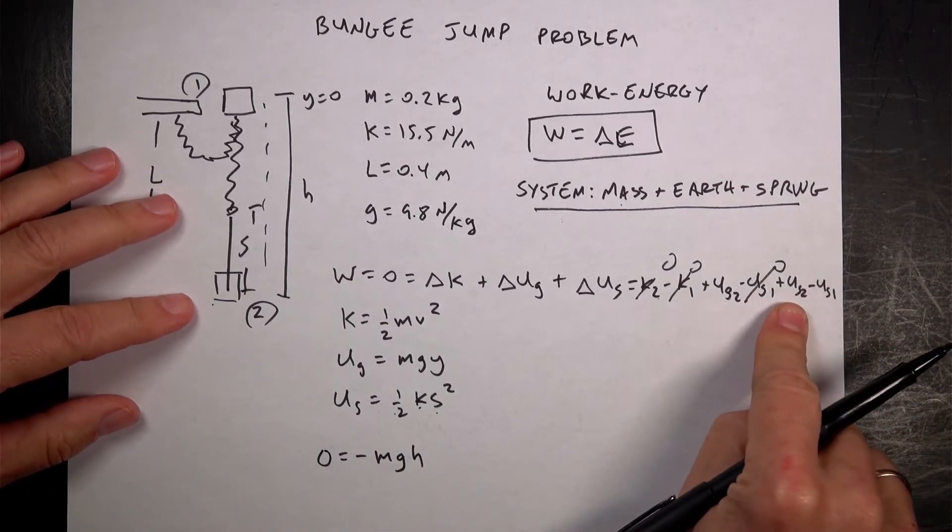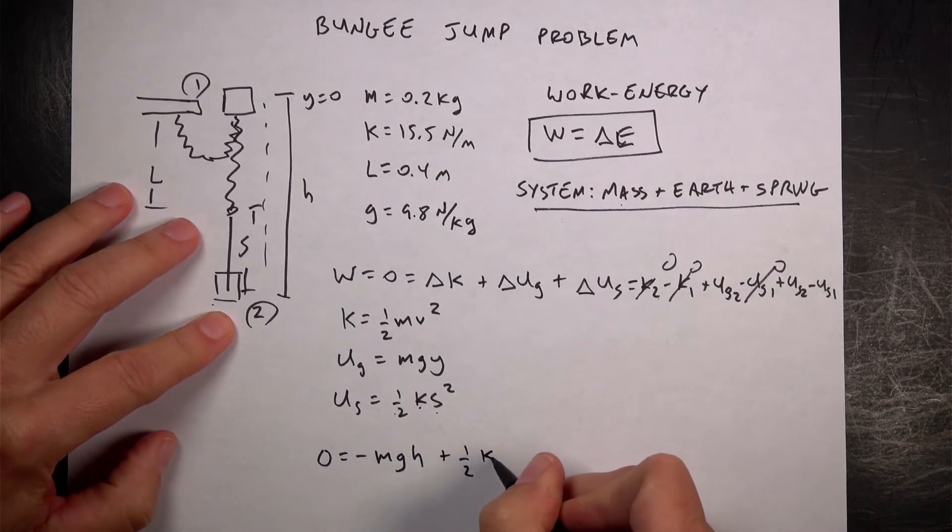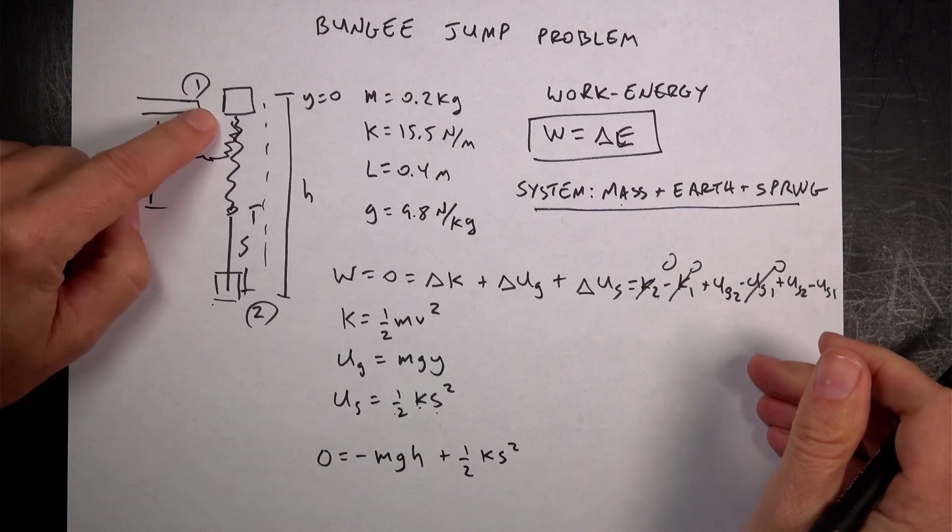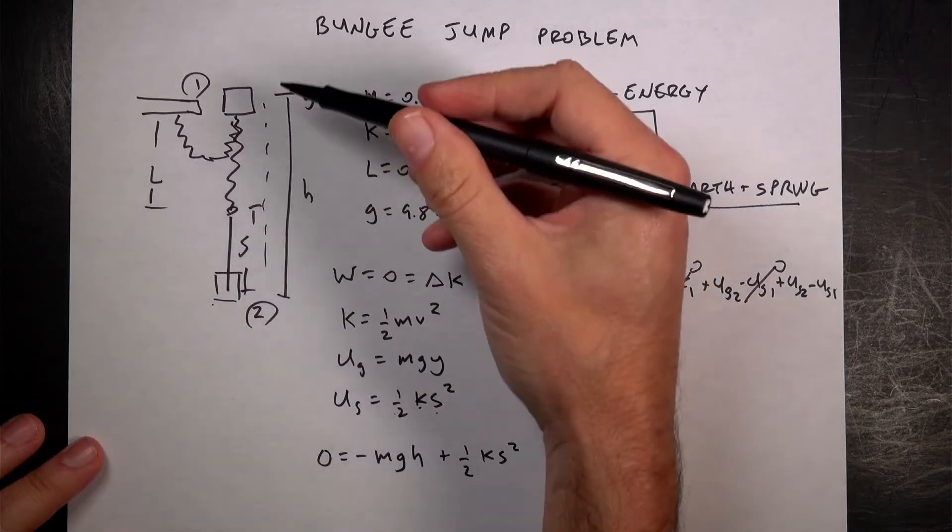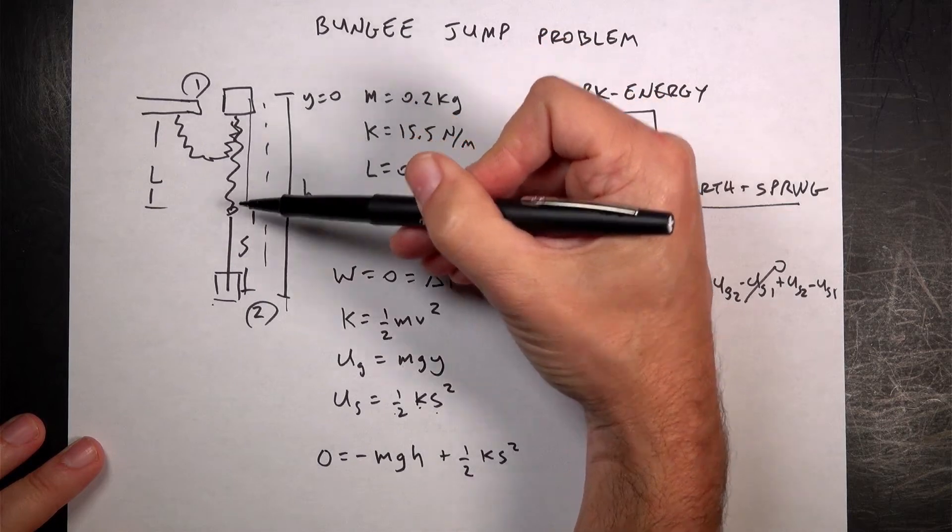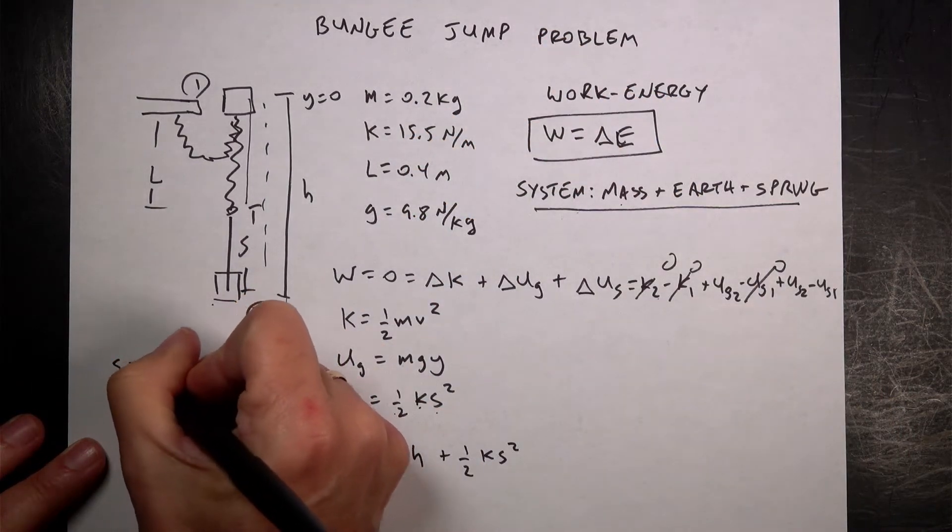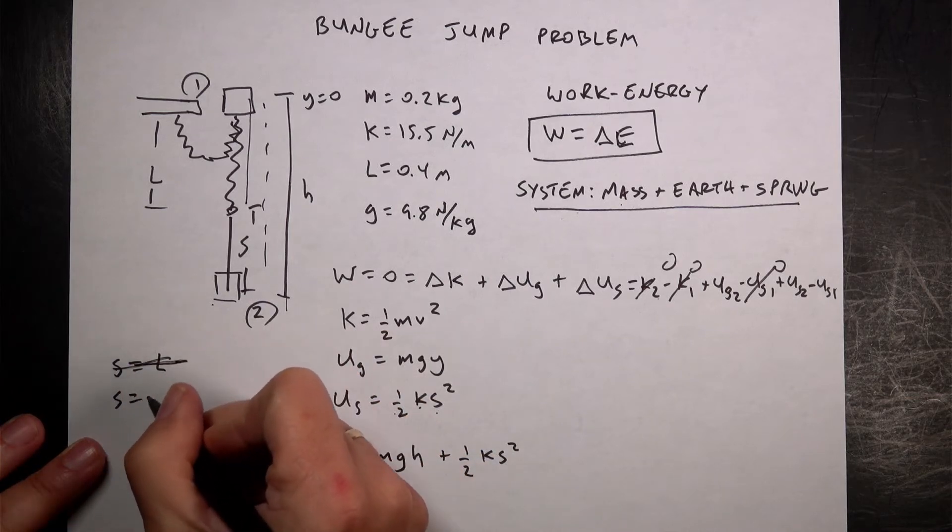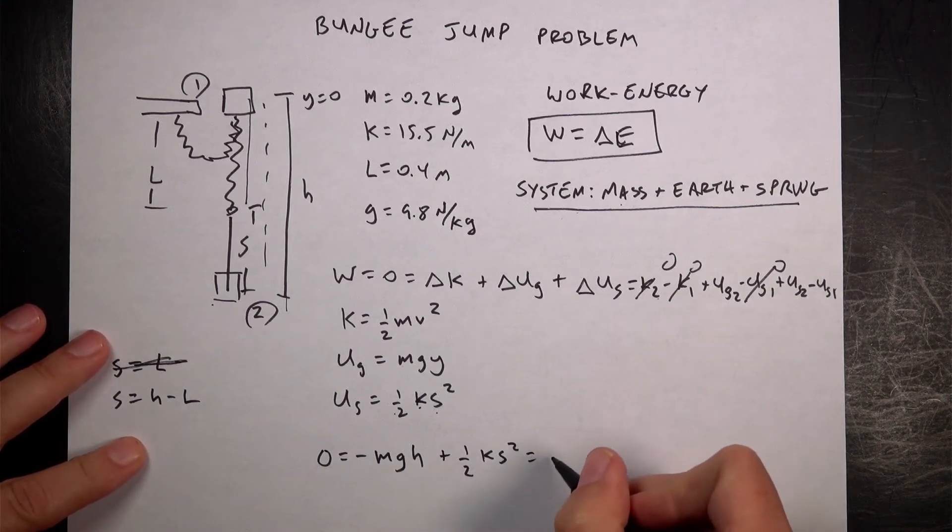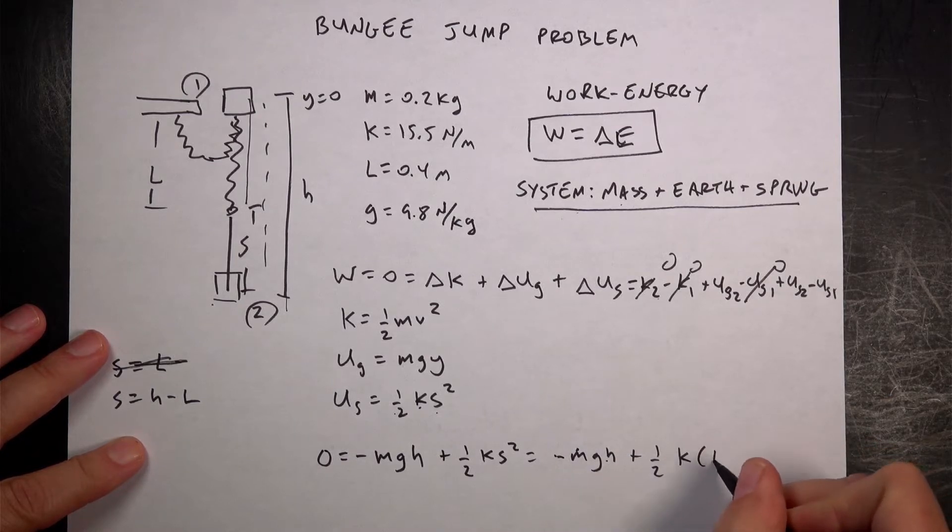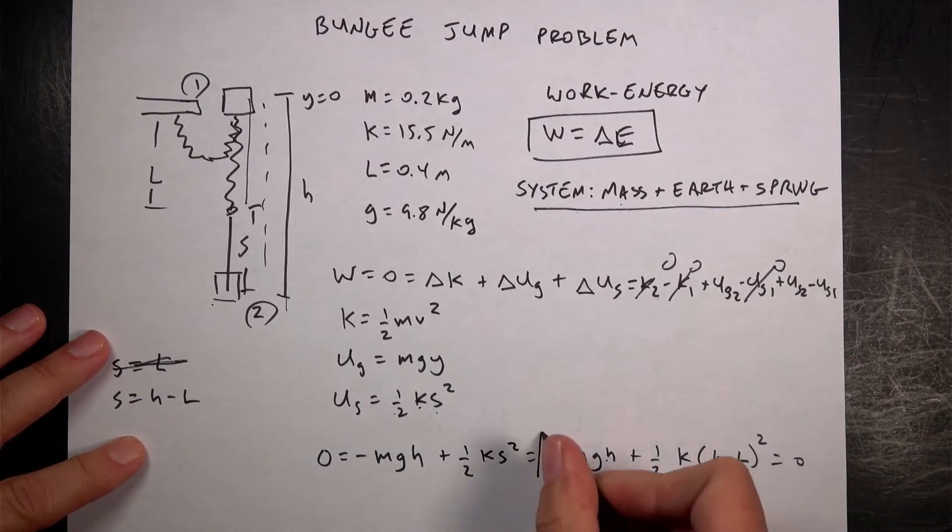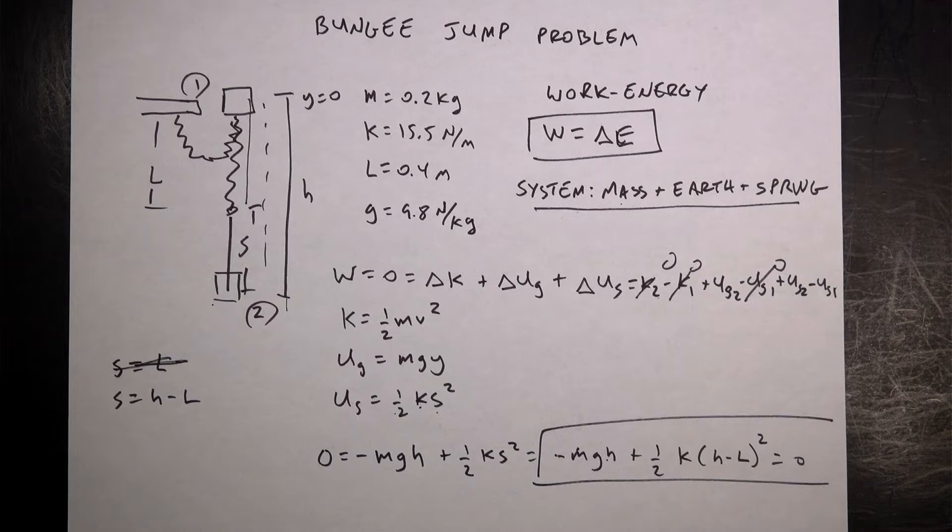Now what about the spring potential? So I have the final spring potential is going to be plus one half KS squared. The initial, it's not stretch or compress at all up here. It's just hanging. So that's zero. So this is my equation. I want to solve for H, but S depends on H2. So in fact, I can see here if this is the distance H and this is the distance L, then S is going to be equal to L. I mean, sorry, it's not. S is going to be H minus L. So if I put that in here, I get negative MGH plus one half K H minus L quantity squared equals zero. And this is the equation that I want to solve. So let's solve that equation for H because I know M, I know G, I know K, I know L. I know everything in there but H.